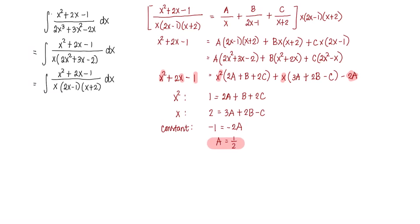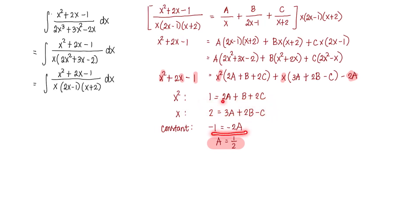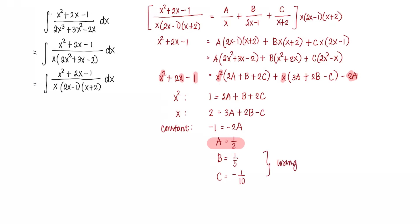We can substitute A into the remaining two expressions to form two equations with two unknowns, or use a calculator to solve for all three constants. After solving, we get B equals 1/5 and C equals negative 1/10.